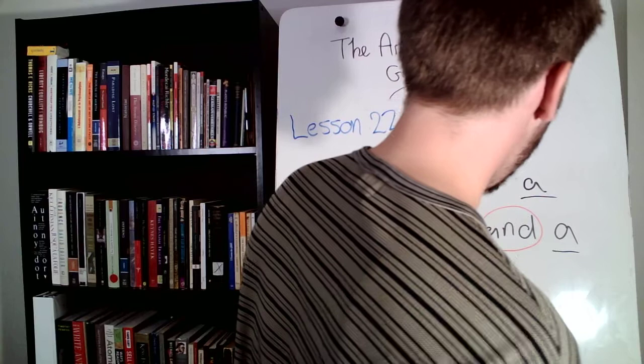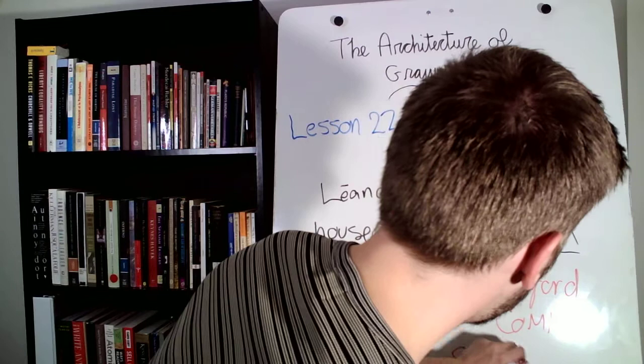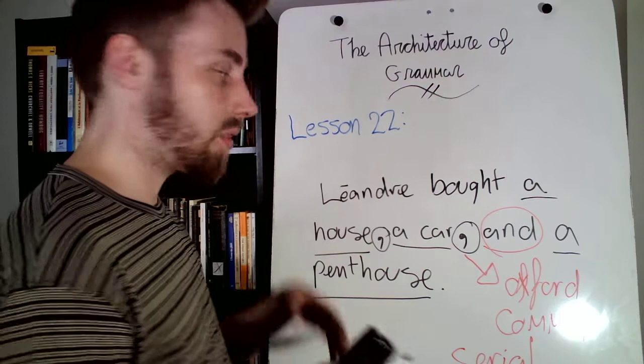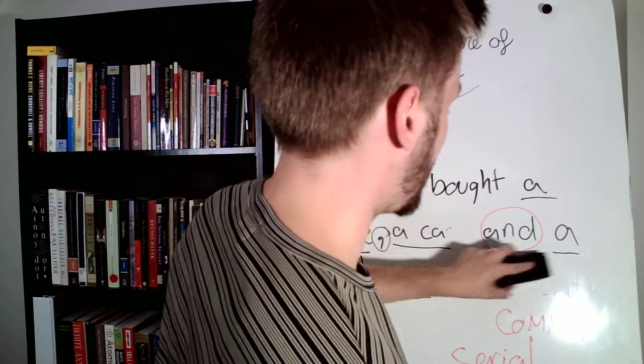So, a car and a penthouse. Now, this sentence here, as before the end, this is called an Oxford comma. Or, it's also known as serial comma. And, it's actually not necessary to have this. The serial or the Oxford comma is actually a stylistic preference. So, you can actually remove it. But, the problem is, if you remove it, it might cause some confusion.